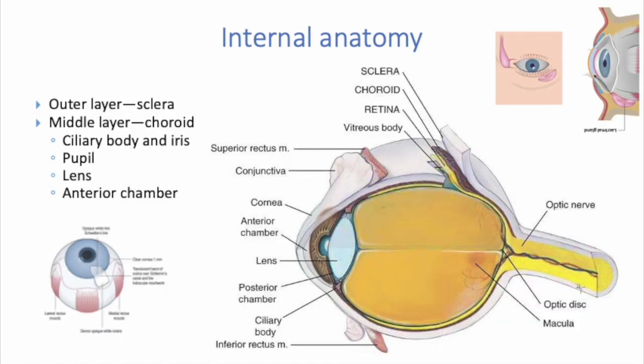Now we're taking a closer look at the internal anatomy. The layers of the sclera and the conjunctiva separate the external and internal anatomy. The conjunctiva is that transparent protective covering of your eye. The palpebral conjunctiva specifically lines the eyelids — it's clear and you can see many small blood vessels. The bulbar conjunctiva overlies the eyeball, with white sclera showing through. At the limbus, the conjunctiva merges with the cornea.